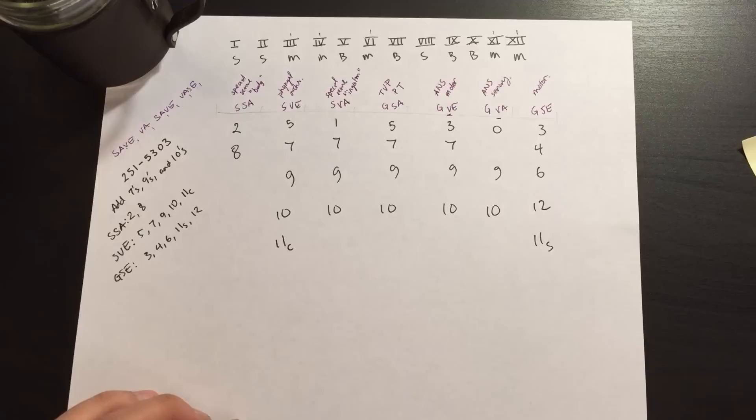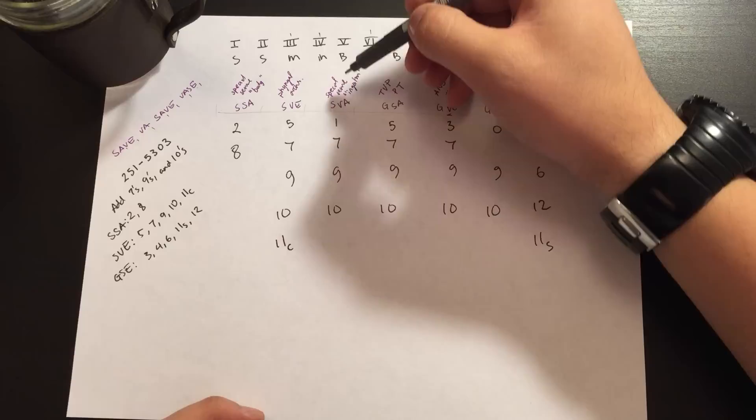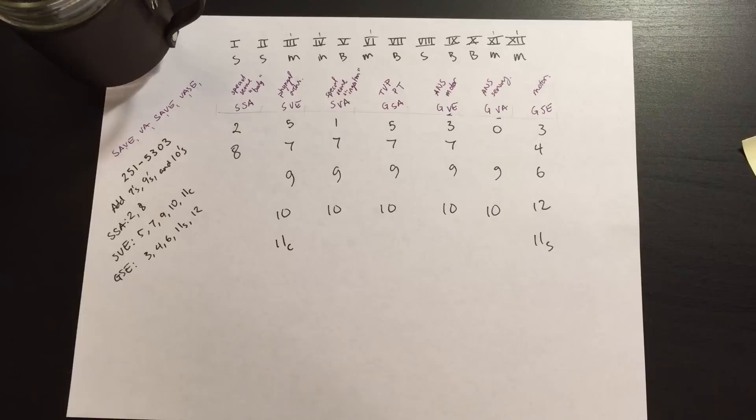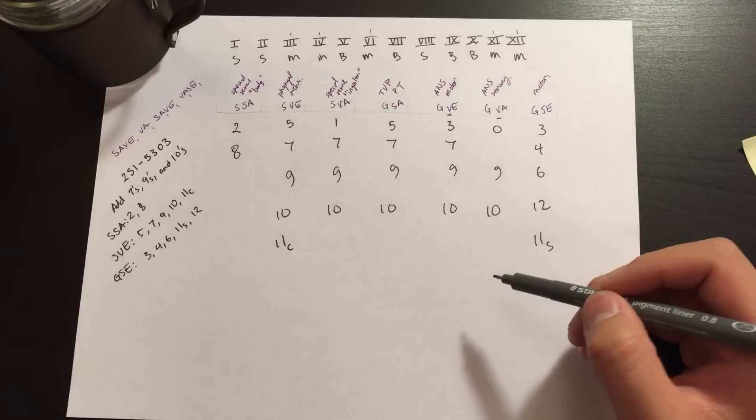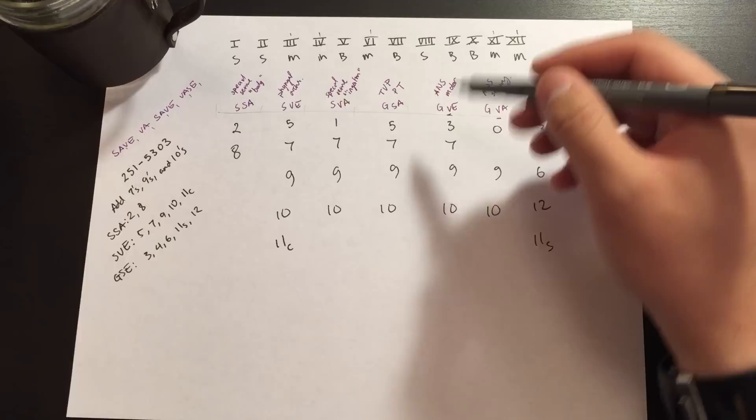And just to go back and reiterate something, the SVA, the special visceral afferent, the ones that are involved with ingestion, this is our smell, cranial nerve one olfactory, and then seven, nine, and ten are involved in taste. And this is it, this is a chart of all of the cranial nerves and with their modalities.